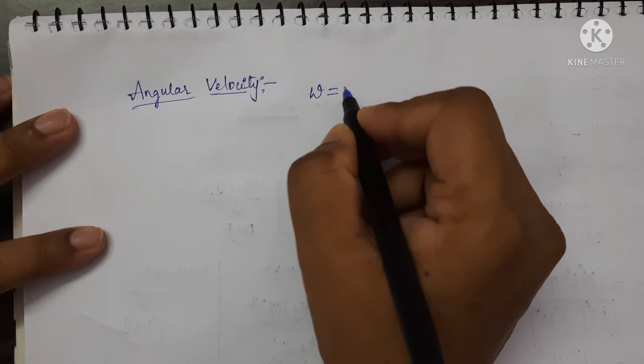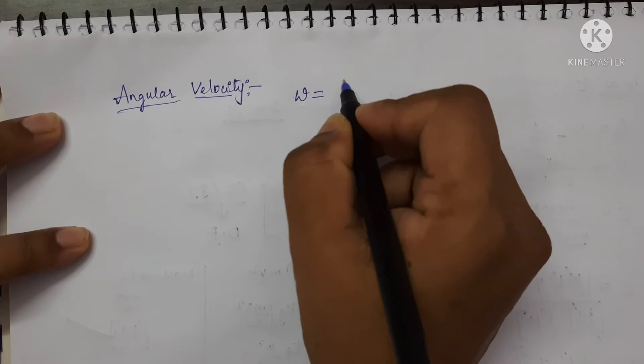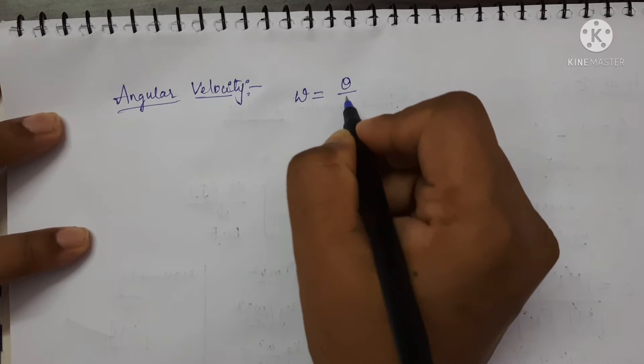Formula for angular velocity: omega is equal to angular displacement per unit time.